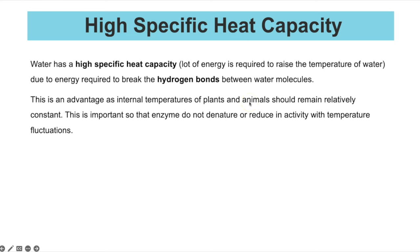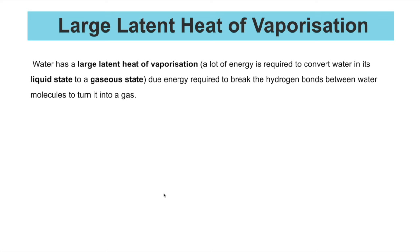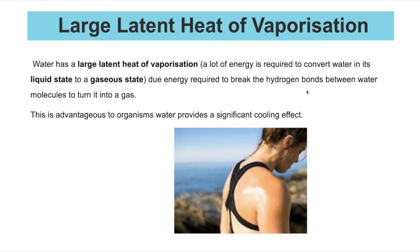Water has a high specific heat capacity because of the large number of hydrogen bonds between water molecules — a lot of energy is needed to break them and raise water's temperature. This means water acts as a temperature buffer, keeping internal temperatures of plants and animals relatively constant even as external temperatures fluctuate, preventing enzyme denaturation — particularly important for aquatic organisms. Water also has a large latent heat of vaporisation — much energy is required to evaporate it — so sweating provides significant cooling as the heat energy evaporates water from the skin.